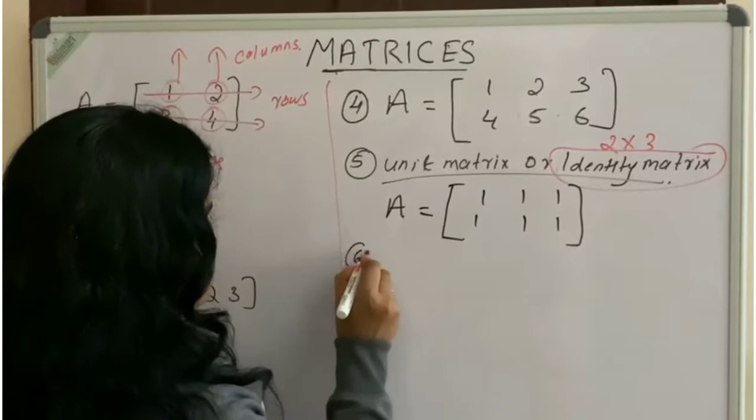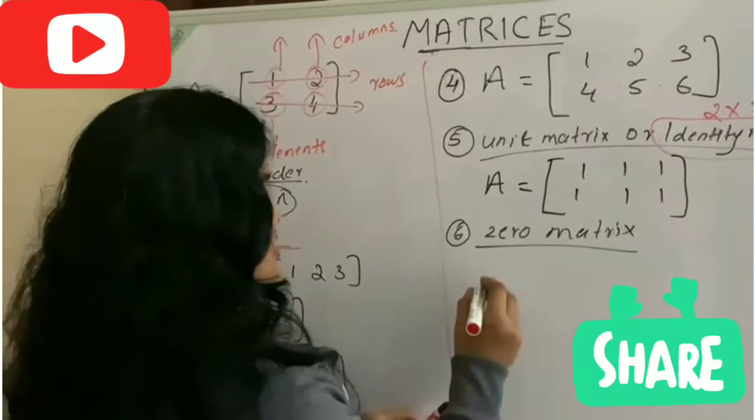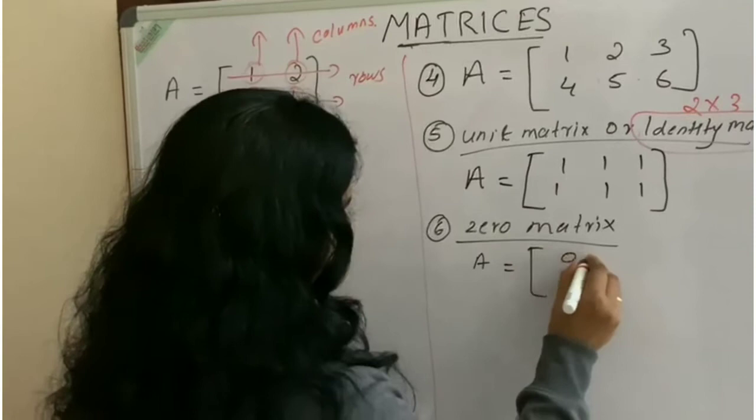Then, next category is zero matrix. As its name implies, it is a matrix where all elements are zero. Its other name is null matrix.